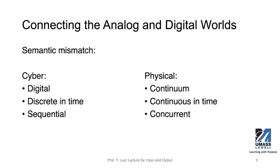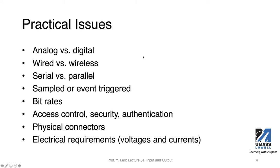We need to have ways to connect these analog and digital worlds. There are many practical issues to resolve in actual system design. Analog versus digital is the first: how do we convert analog signals into digital values that cyberspace components can process? Also, there are wired connections for transferring information, but there are situations where wireless communication is preferred because of physical limitations — distance and accessibility. We also need to consider whether to use serial or parallel fashion for data transfer.